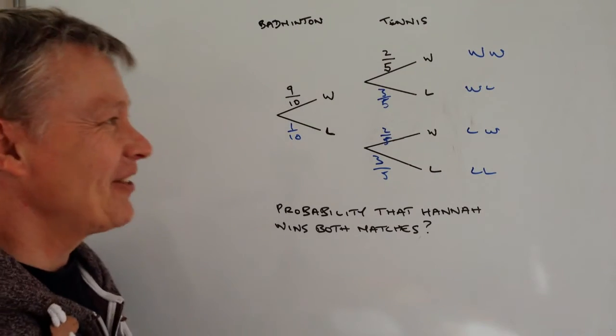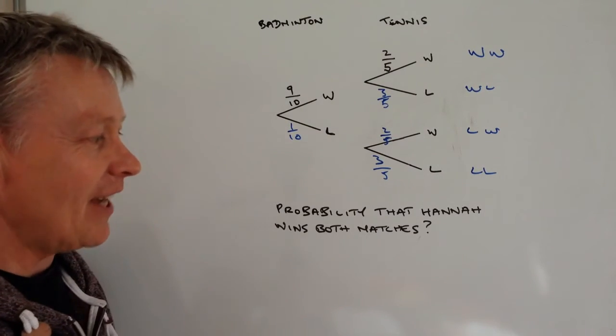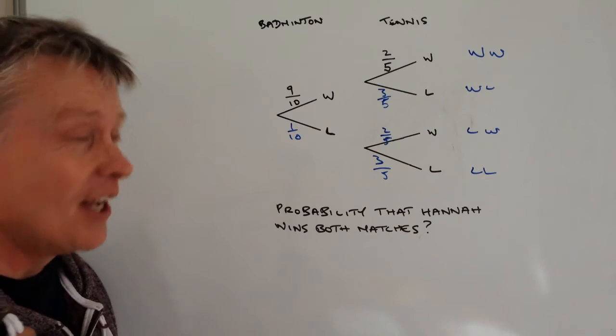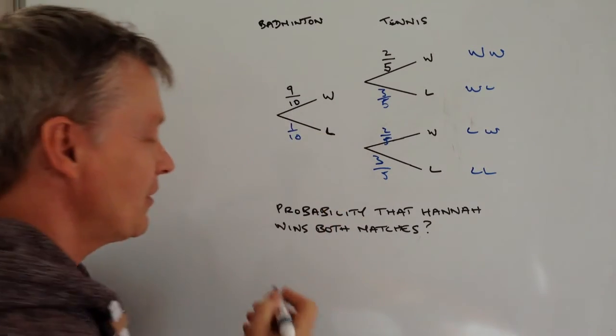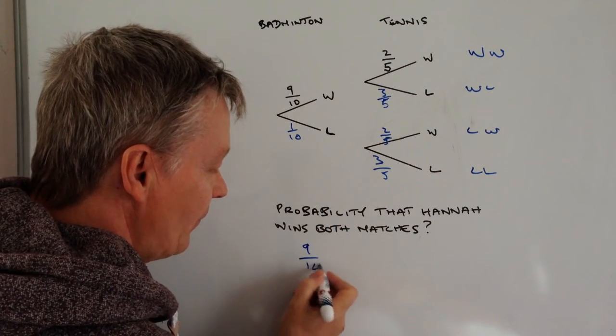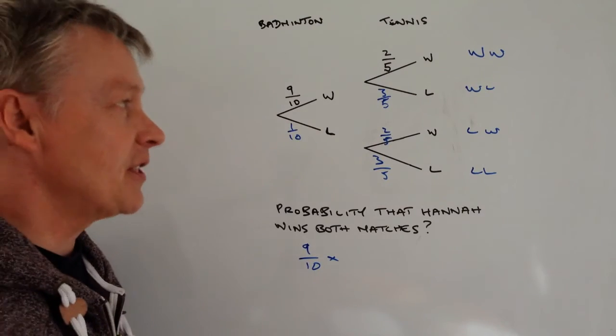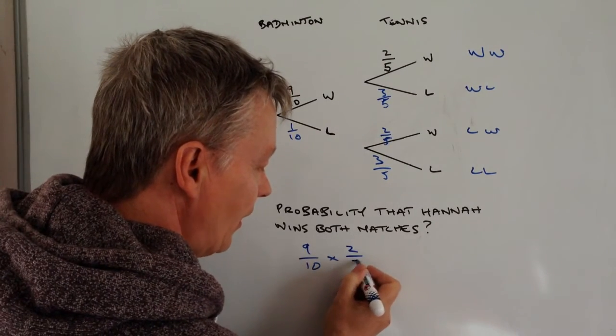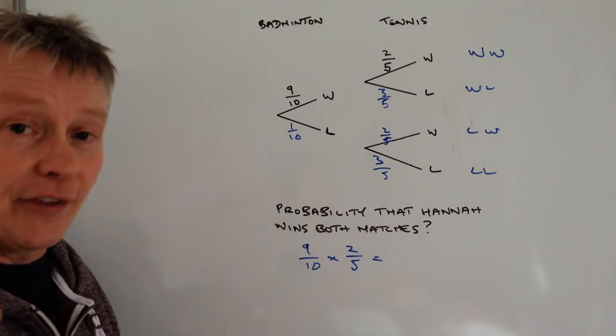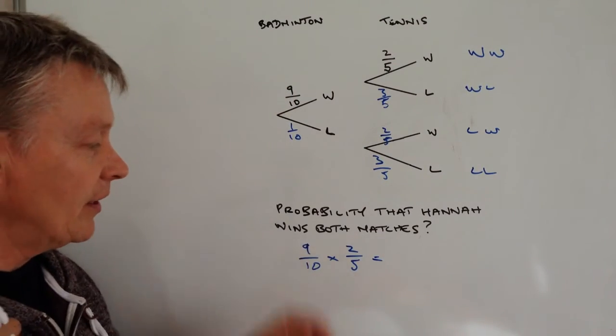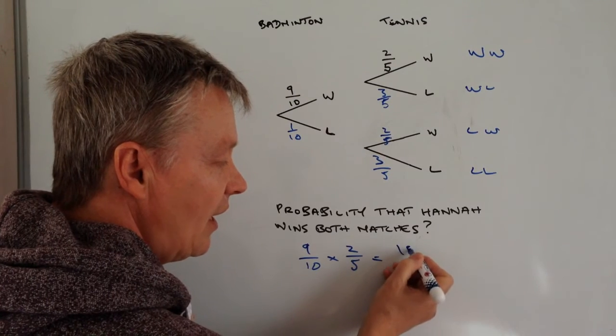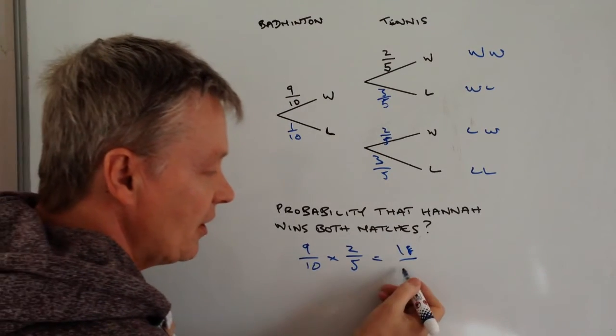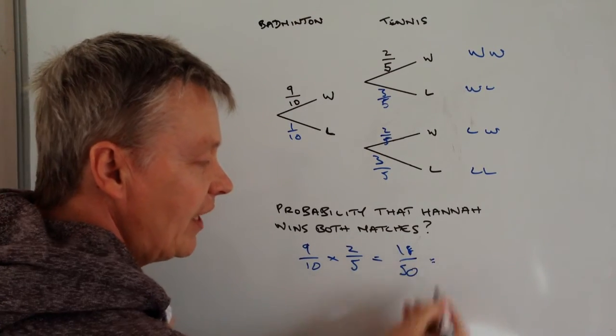So to answer the question, the probability that Hannah wins both matches, we look at the win for badminton which is nine out of ten and the win for tennis which is two out of five, and then we simply multiply both fractions together. Nine times two is 18, and on the bottom we get ten times five which is 50.